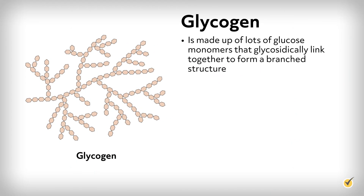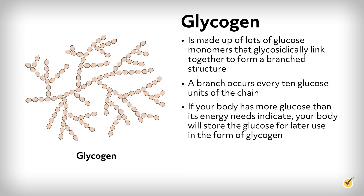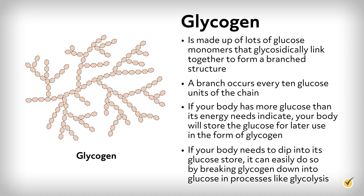Today we'll talk about the three main homopolysaccharides: glycogen, starch, and cellulose. Glycogen is made up of lots of glucose monomers that glycosidically link together to form a branched structure. A branch occurs every 10 glucose units of the chain. If your body has more glucose than its energy needs indicate, it will store the glucose for later use in the form of glycogen. If your body needs to dip into its glucose store, it can easily do so by breaking glycogen down into glucose in processes like glycolysis.